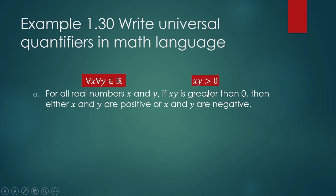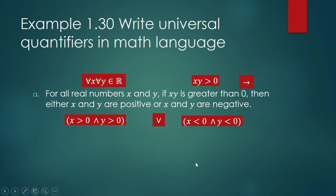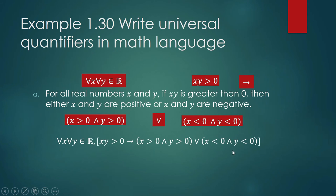Next, 'if x times y is greater than zero' — the product xy is greater than zero. There is a connective 'if...then,' so we use the implication symbol. Then 'either x and y are positive' — 'either...or' is a disjunction. But within each branch, 'x is positive and y is positive' is a conjunction. Similarly, 'x and y are negative' becomes x is less than zero and y is less than zero. Putting it all together gives us the complete math sentence.